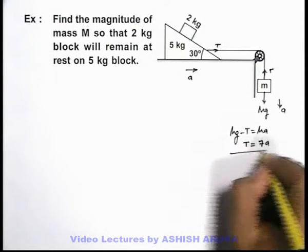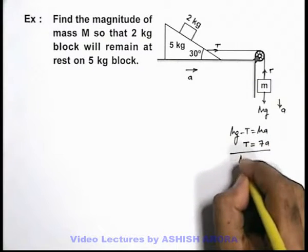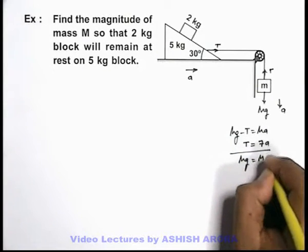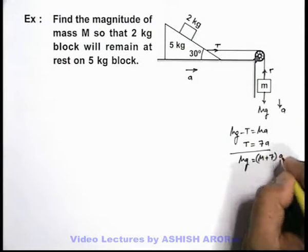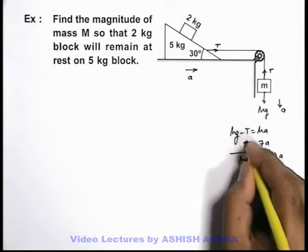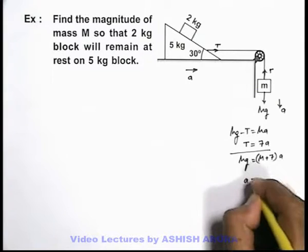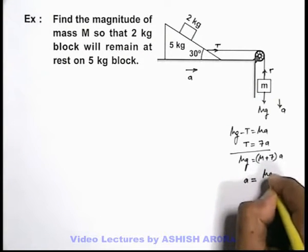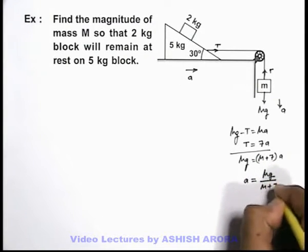On solving this equation we can directly get mg = (m + 7)ay. Here we've just added the 2 equations to remove the factor of tension. We can see the acceleration of system we get is mg/(m + 7).